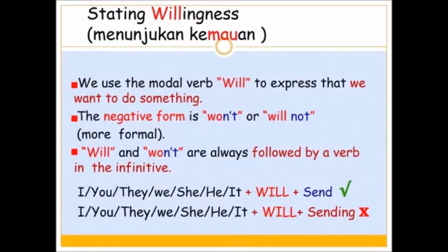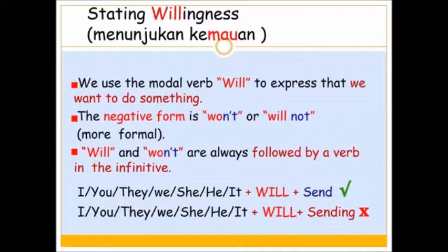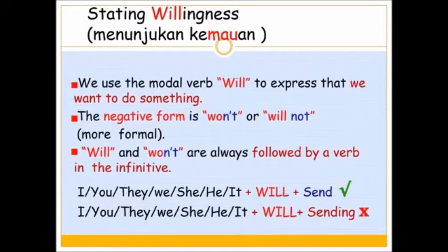Alright, my students. Kalau tadi kita belajar tentang menanyakan kemampuan — asking for ability — now let's move to stating willingness, yaitu menunjukkan kemauan. Biasanya kita menunjukkan kemauan menggunakan modal verb 'will'. Ada banyak modal verbs di bahasa Inggris. Kalau tadi kita sudah belajar modal verb can untuk kemampuan, sekarang modal verb lain yaitu will untuk menunjukkan kemauan.